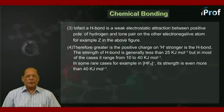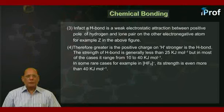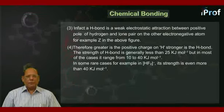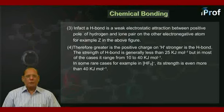The strength of an H bond is generally less than 25 kilojoules per mole. But in most cases, it ranges from 10 to 40 kilojoules per mole. And in some rare cases, for example in HF2⁻, its strength is even more than 40 kilojoules per mole.